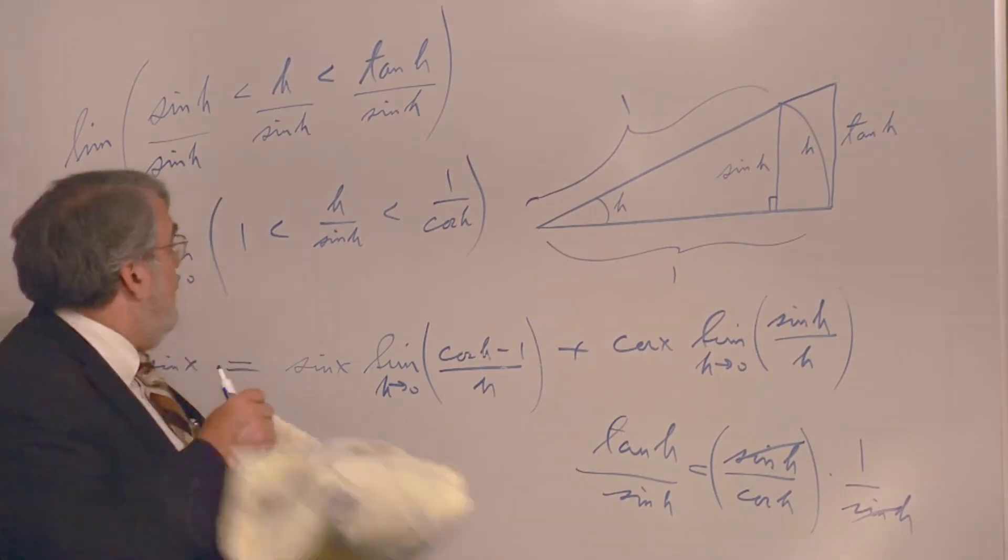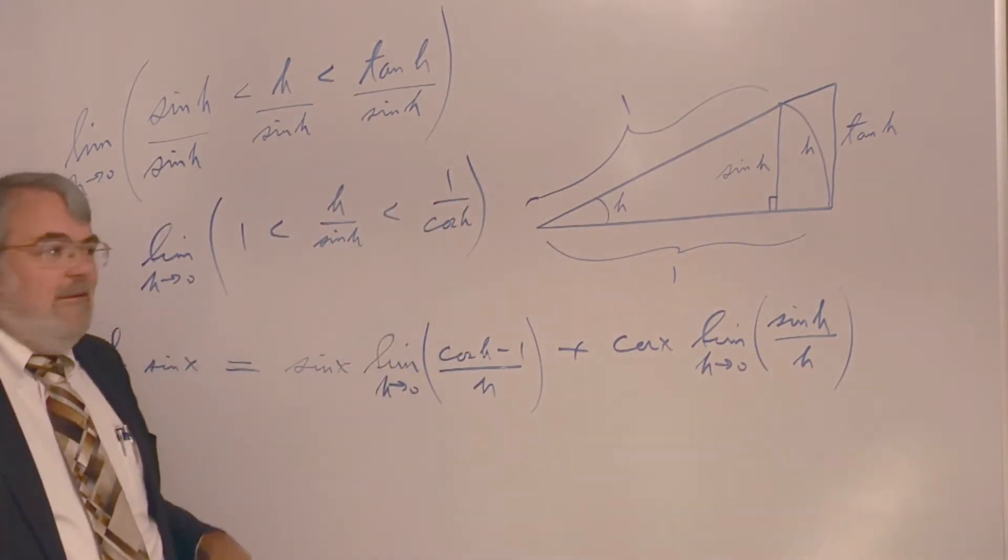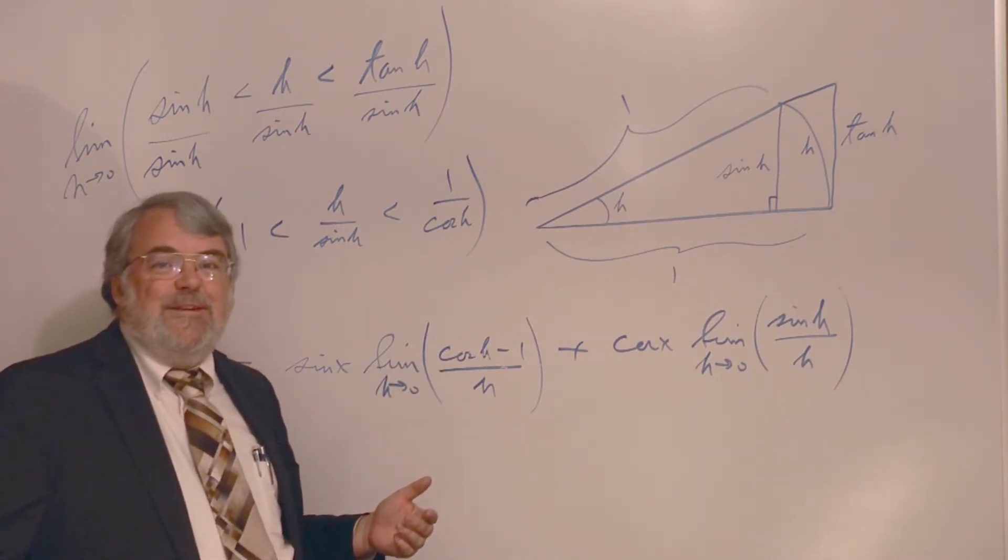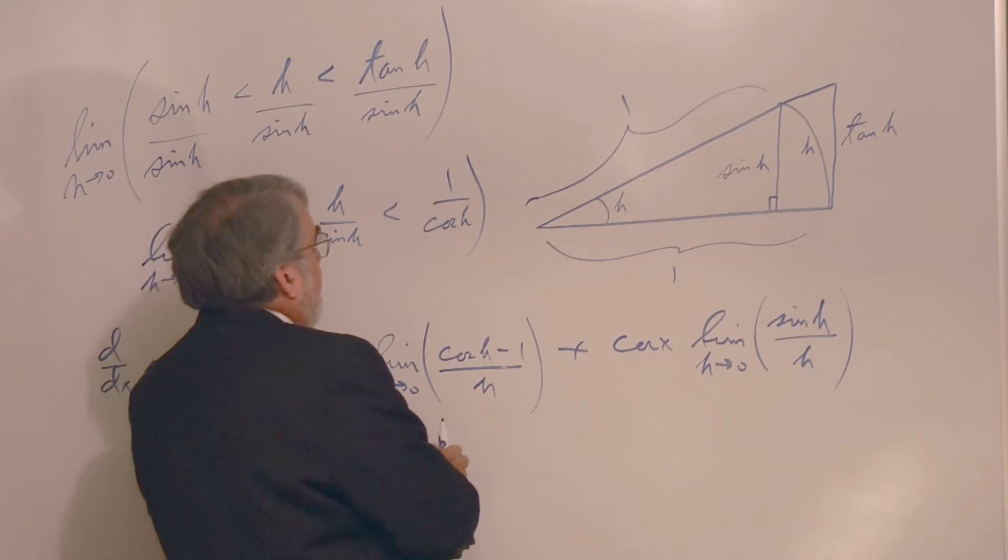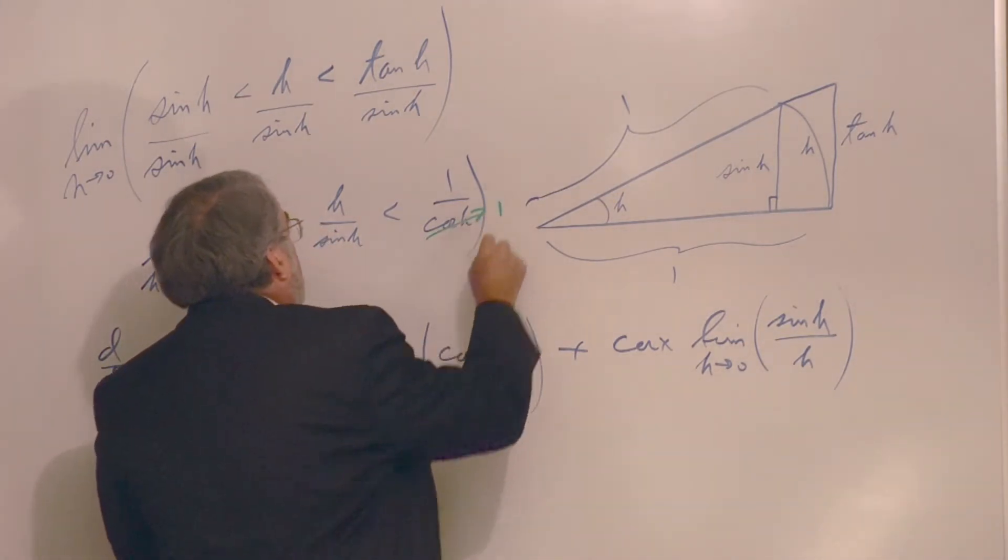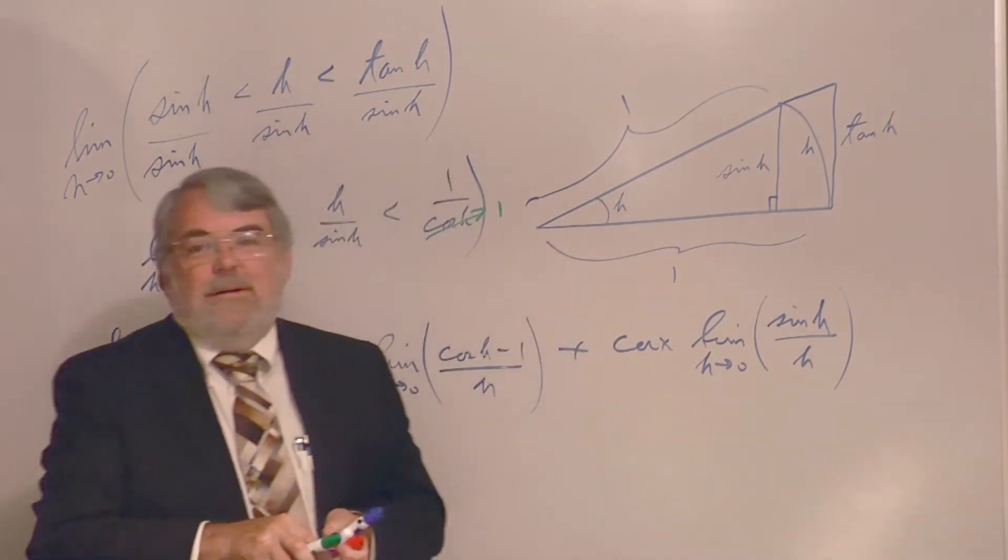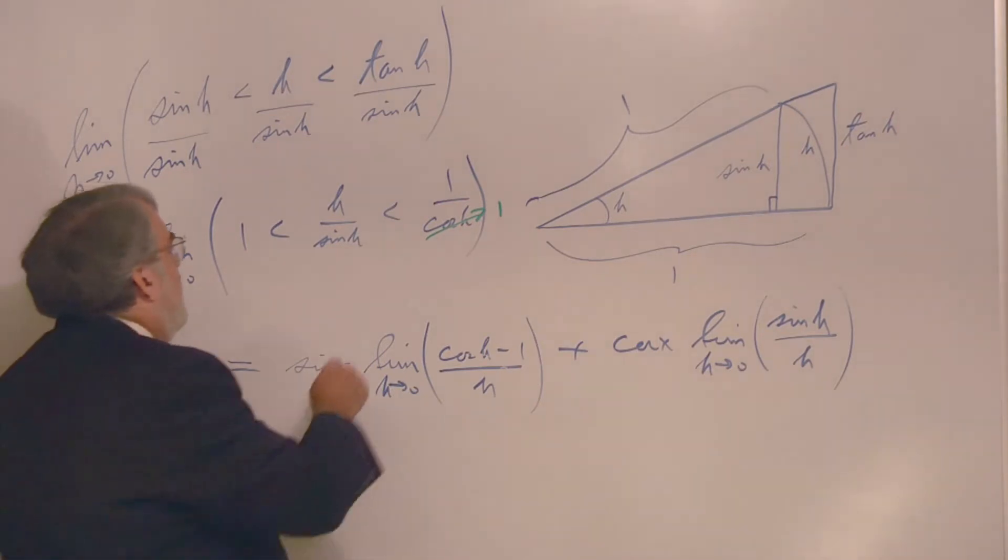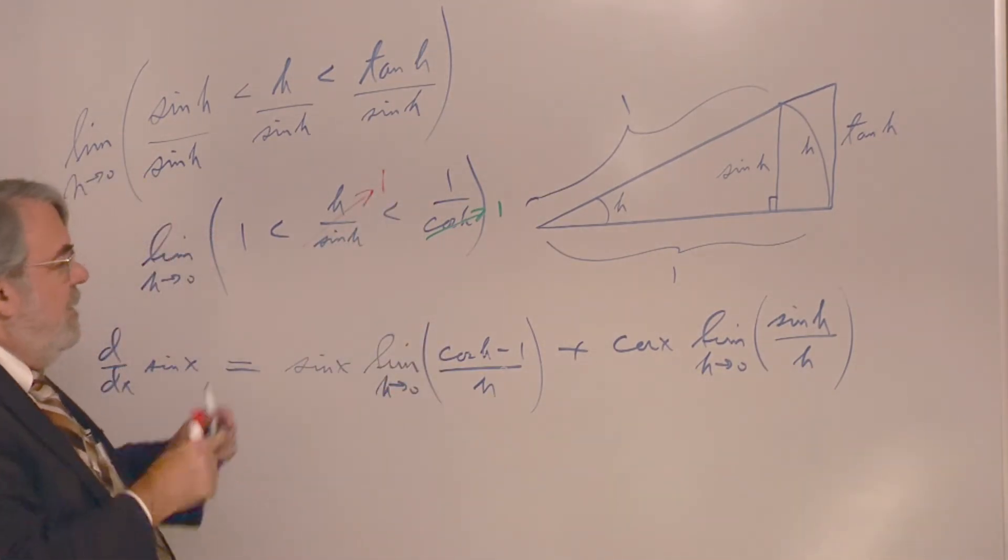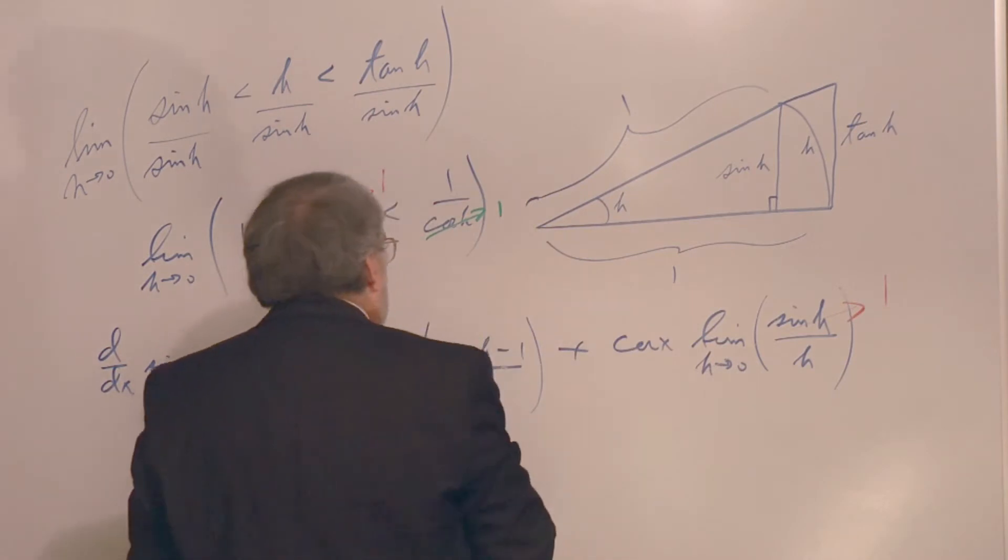Now then, we're about done, because as h goes to zero, the cosine of h goes to the cosine of zero. And what's the cosine of zero? It's one. So this is converging to one. So, as a limit, we have this limit is trapped between one and one. It gets squeezed together between one and one. Guess what? The limit is one. So, that tells us that this limit has to go to one. It's between one and one as they get closer and closer. So, since that's one, its reciprocal is also one. So, limit of sine h over h is one. Look at that. Oh, isn't that fantastic?